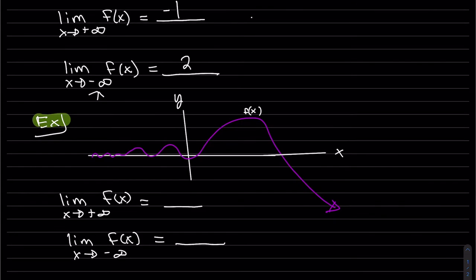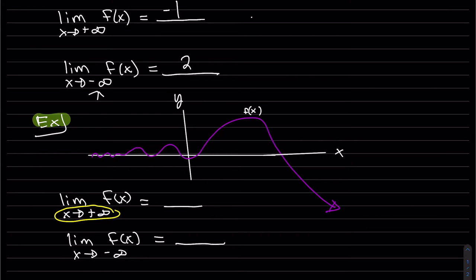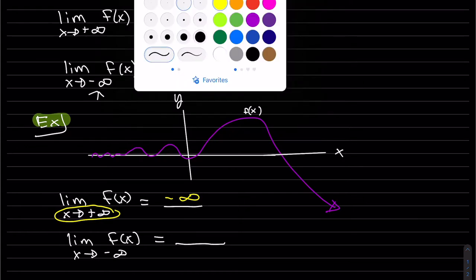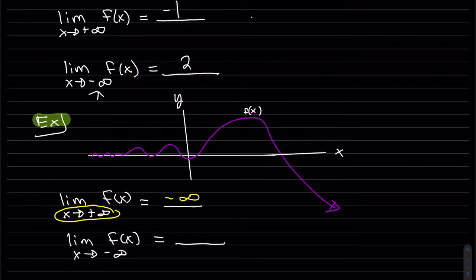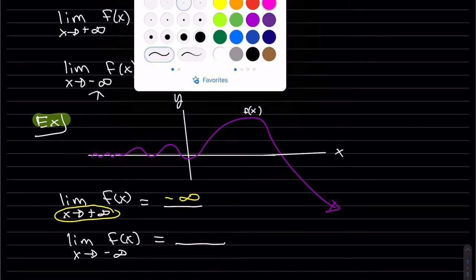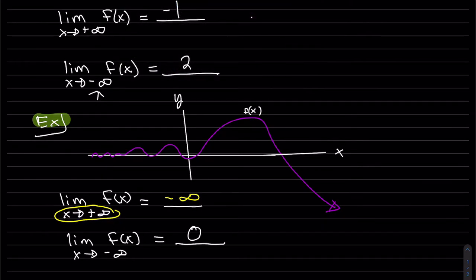This function has different end behaviors. As x goes to positive infinity, we can see the y values heading to negative infinity. As x approaches negative infinity, the graph is oscillating, but with smaller and smaller oscillations, so hopefully you can see the y value is approaching zero.